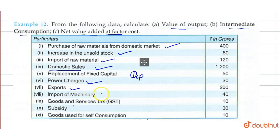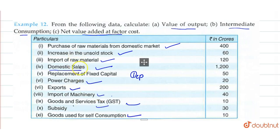This power charge cost will come under our intermediate consumption. Import of machinery — this will also be our intermediate consumption. We also have GST, subsidy, and goods used for self-consumption. Self-consumption will also be added to our domestic sales. We will add domestic sales, export, and self-consumption — these three will be added.